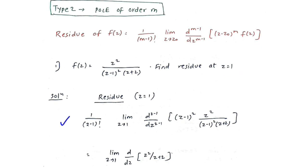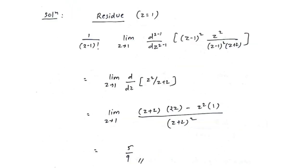Substituting: 1 over (2 minus 1) factorial, limit as z tends to 1, first derivative of (z minus 1) squared into f of z. The (z minus 1) squared terms cancel, leaving the differentiation of z-squared upon (z plus 2).